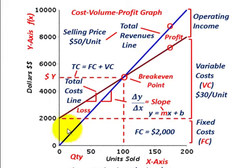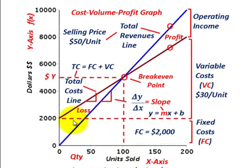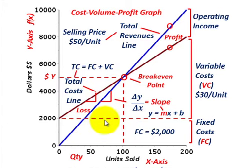Starting with our total revenues line: when you sell zero units you have zero revenue, and as you sell more units revenues increase. To determine the slope — the steepness or increase — we look at the change in y (dollars) over the change in x (units sold). For total revenues, the selling price is $50 per unit.